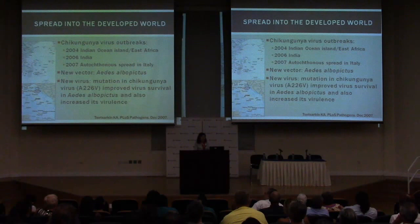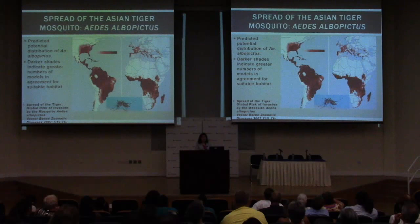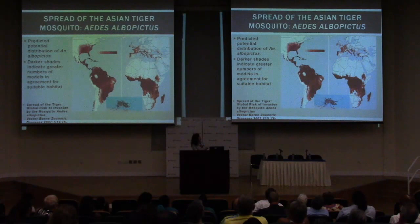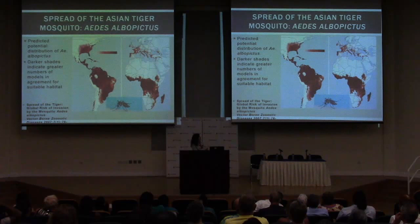This mutation explained why the disease seemed more severe than what had previously happened in India and why it was spreading so well in Italy. Aedes albopictus looks a lot like Aedes aegypti — both are black and white striped. Maps show the spread of this mosquito with darker shades indicating greater numbers of suitable habitat, and you can see that in Grenada they are also widely present.